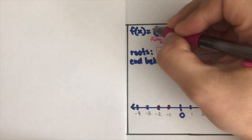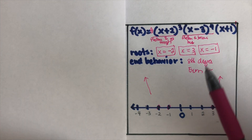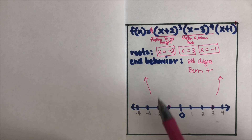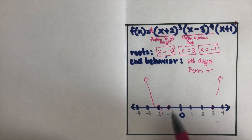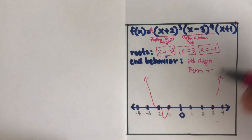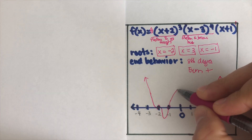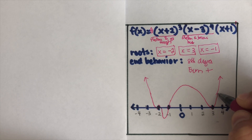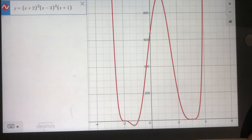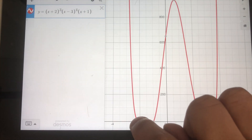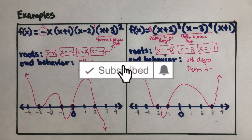Eighth degree is even and the leading coefficient is positive, so both ends go up — even positive. Sketching the graph: at negative two, it flattens and goes through; at negative one, nothing special happens, it just passes through; at positive three, it flattens and bounces back. I graphed this on Desmos as well — it flattens at negative two and bounces back at positive three. If you found this helpful, please like and subscribe for more math videos!